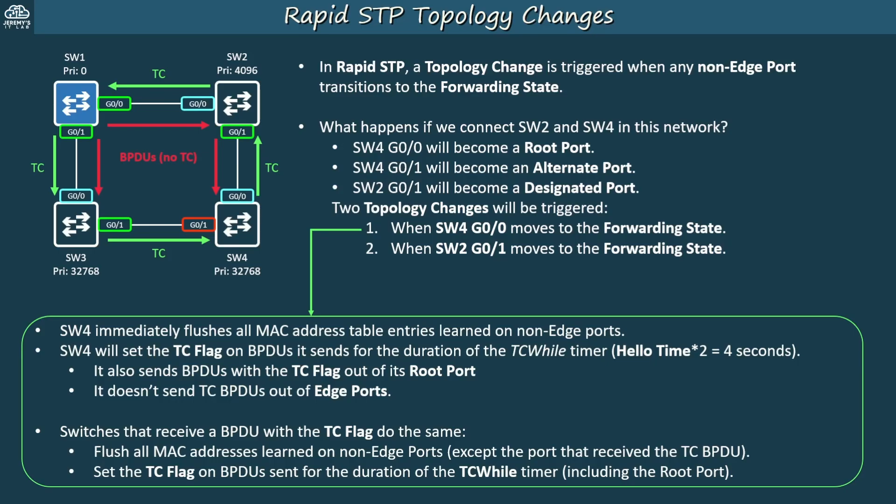That's the Rapid STP topology change process. There is no TCN and TCA to notify the root bridge. Instead, the switch that the topology change occurred on sends BPDUs with the TC flag, that TC information is flooded throughout the network, and switches clear entries from their MAC address tables.